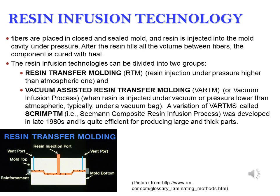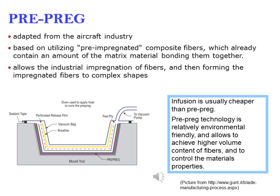Currently, the most widely used technology is the resin infusion technology. Fibers are placed in a closed and sealed mold, and resin is injected into the mold cavity under pressure. After the resin fills all the volume between fibers, the component is cured with heat. Resin infusion technologies can be divided into two groups: resin transfer molding (RTM), with resin injection under pressure higher than atmospheric; and vacuum-assisted resin transfer molding (VARTM), or vacuum infusion process, where resin is injected under vacuum — typically under a vacuum bag. The pre-preg technology, adapted from the aircraft industry, is based on utilizing pre-impregnated composite fibers which already contain an amount of matrix material bonding them together.